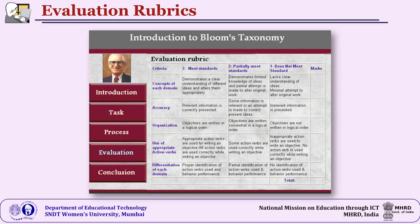Let us take one example — Bloom's taxonomy. For teacher training, this is one of the important concepts. Bloom's taxonomy refers to the hierarchy of objectives and tells you how objectives can be stated. Rather than asking a direct question, we give students an assignment and evaluate them comprehensively for their work. On the vertical side we have five aspects: concept of each domain, accuracy, organization, use of appropriate action verbs — an important aspect of writing objectives — and differentiation of each domain. We are talking about three domains: cognitive, affective, and psychomotor.